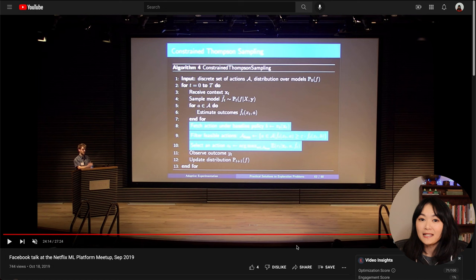Facebook uses a modified Thompson sampling algorithm called constrained Thompson sampling to optimize the quality of video in the video uploading process.